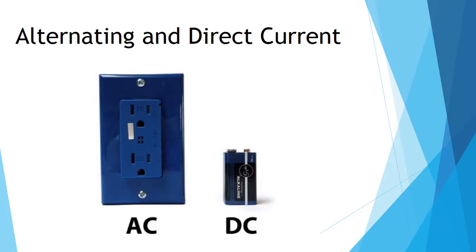There are two types of electrical signals: alternating current, AC, and direct current, DC. Alternating current is what you normally have from an outlet, and what that means is that the direction the electrical current is flowing keeps changing back and forth at a very quick speed. Direct current is always just flowing in one direction, and that's how it's going to be with the battery, which is what we're going to use for all of our projects.